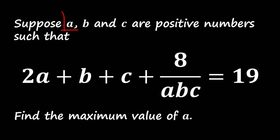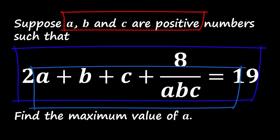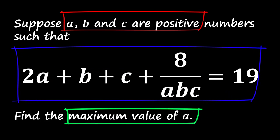We are given that A, B, and C are positive numbers, and the equation (2A + B + C + 8) divided by the product of A, B, and C equals 19. Our goal is to find the maximum possible value of A.